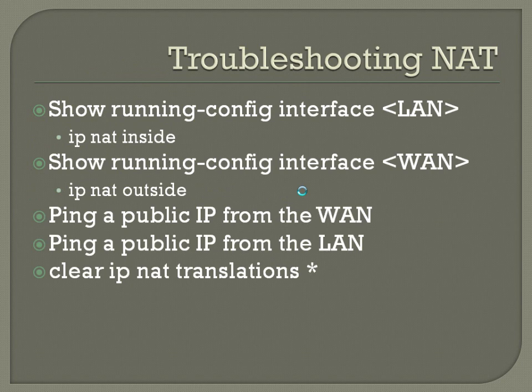For troubleshooting NAT, one thing to verify — and we'll get more into this in the next chapter — is that 'show running-config interface' on your LAN interface should always show 'ip nat inside', and on your WAN interface it should always show 'ip nat outside'. After that, ping a public IP from the WAN and from the LAN to test each side. In some situations you may have a translation stuck in your table; running 'clear ip nat translations *' will clear all translations, which usually won't cause a big problem since devices will create new entries when they reconnect.